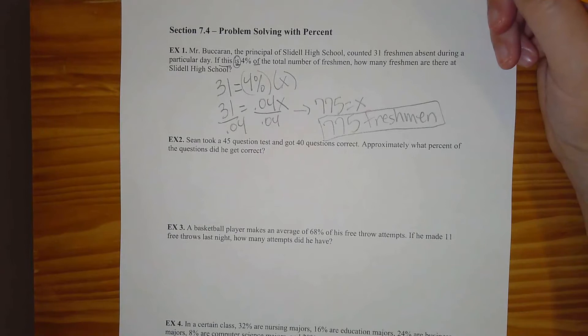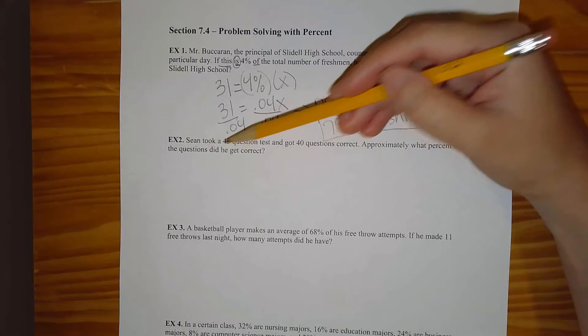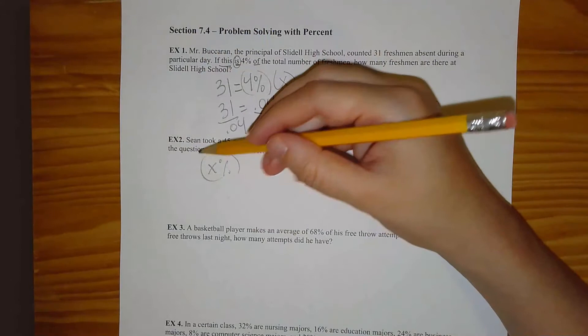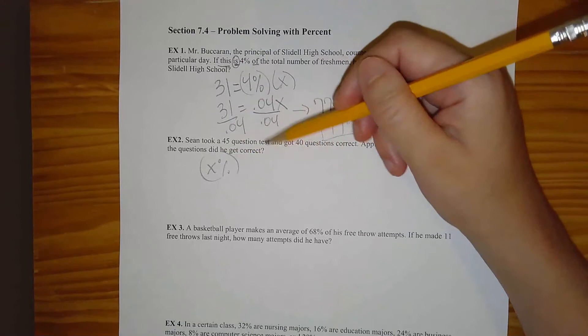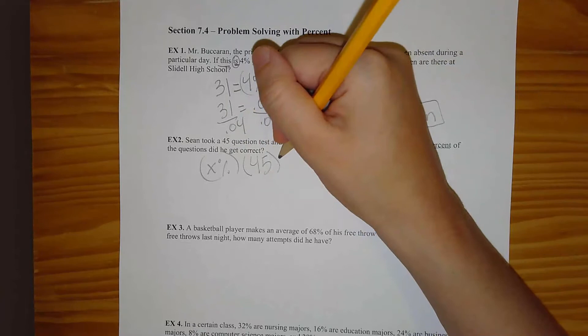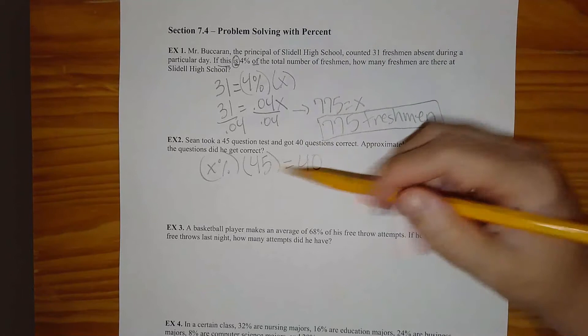Let's do another one. Sean took a 45 question test and got 40 questions correct. Approximately what percent of the questions did he get correct? I'm noticing those keywords again — 'what percent' is my unknown, so I've got x percent of 45 questions equals the number correct. Even though it doesn't use the word 'is,' it's equaling the number correct, which would be 40.